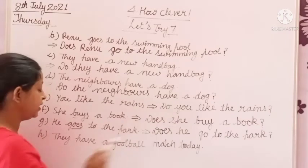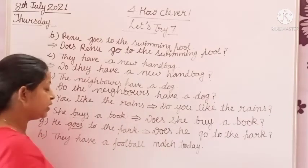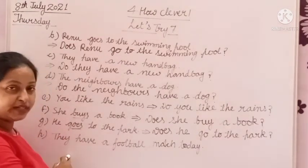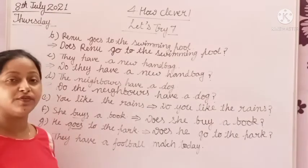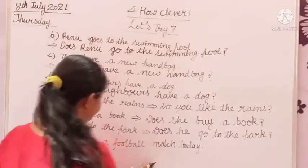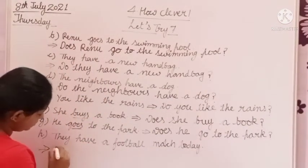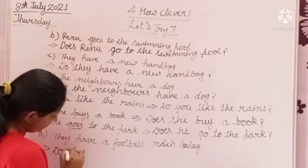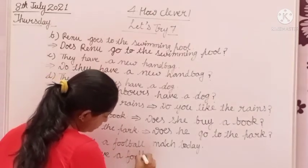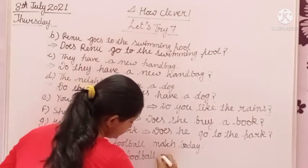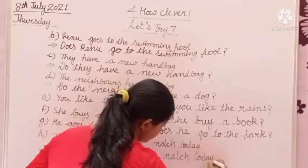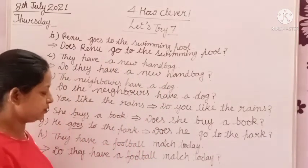They have a football match today. We have to recognize the subject — they. They is the plural subject. That's why we will use do before they. Do they have a football match today? Put a question mark at the end of the sentence.